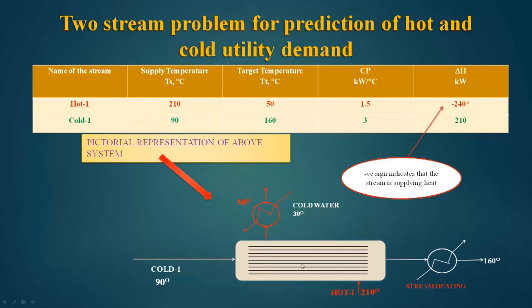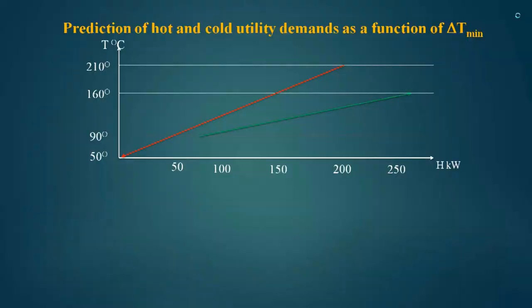Our aim is to find out what is the temperature of the hot stream when it comes out from the exchanger, what is the temperature of the cold stream when it comes out from the exchanger, and what is the demand of hot utility and cold utility. Let us see how to compute the requirement of hot and cold utility demands as a function of delta-t-minimum. For this purpose, let us plot the hot stream and cold stream in a T-H diagram, denoted by hot one and cold one.